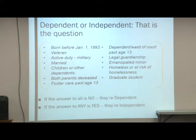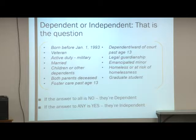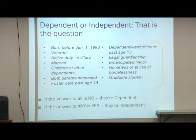They do ask housing questions — whether you're living at home with parents, on campus, or off campus — which helps determine the cost of attendance or budget. A student living on campus is going to be allowed a larger amount for room and board than a student living at home. Students can change their mind — if they initially said they're living at home and then decide to live on campus, they can make that change and we can adjust their budget.